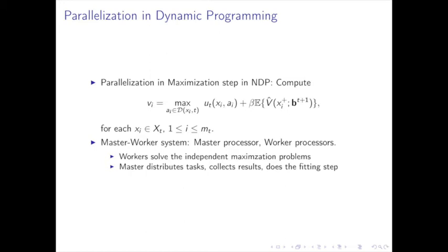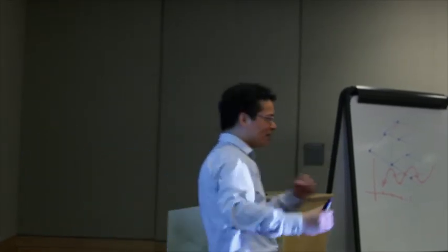The next way to improve the dynamic programming algorithm is parallelization. At each stage T, the optimization problems at different XI nodes are independent. This is the most time-consuming part — solving optimization problems is not simple arithmetic. We use a master-worker system through an MPI framework. The worker processes solve optimization problems independently; each worker solves one or a block of optimization problems. The master process distributes the work, collects the results, and performs the fitting step.